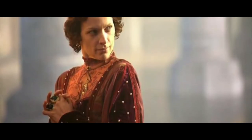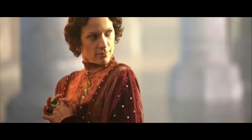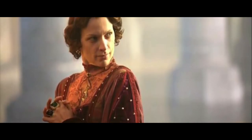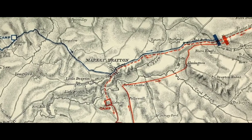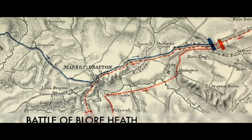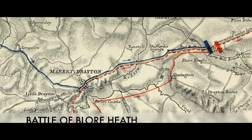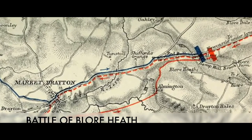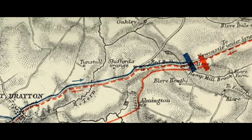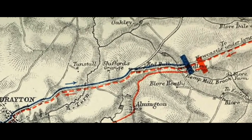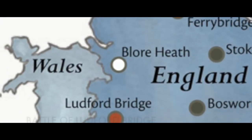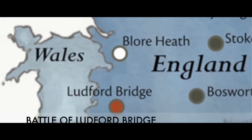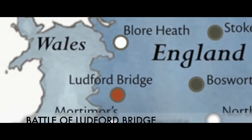For Margaret, this couldn't have happened sooner. She despised York and quickly had him and his officials sacked. Although an unsteady period of peace followed for several years, in 1459 the two houses once again came to blows, when Margaret intercepted Salisbury's forces at the Battle of Blore Heath. Although the Yorkists were initially successful, this victory was quickly reversed three weeks later when the Yorkist army was obliterated at Ludford Bridge.